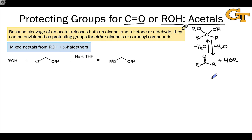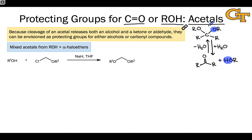Let's think first about how acetals can be used as protecting groups for alcohols. The beauty of the acetal from the alcohol's perspective is that the acidic hydroxyl hydrogen has been removed in the acetal product. And so we can use an acetal as a protection agent in strong base, for example, where that hydrogen would be deprotonated by the strong base. With it gone in the acetal, this acetal can withstand strongly basic conditions.